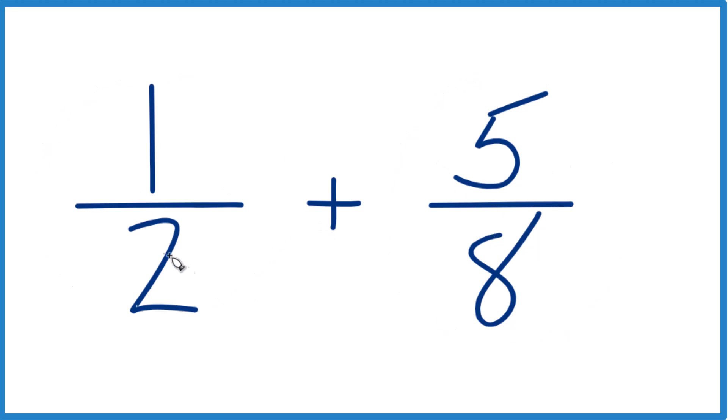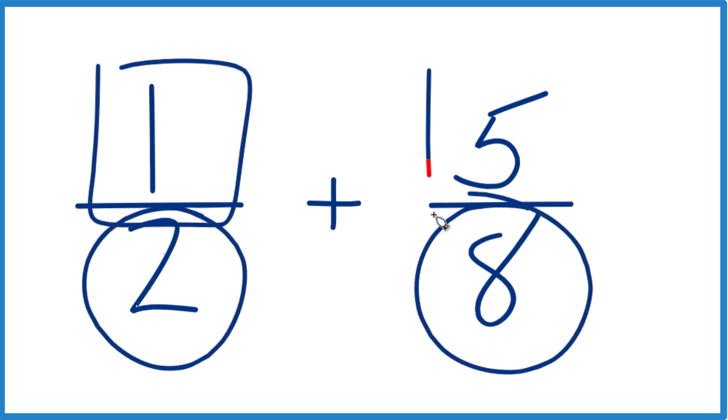The first thing we need to do is get these denominators to be the same. If we have the same denominators, we can just add the numerators together, and we're done. So why don't we do this?